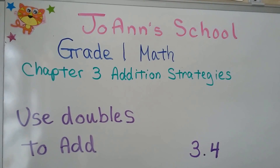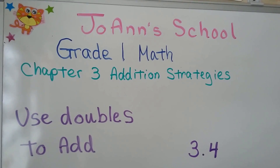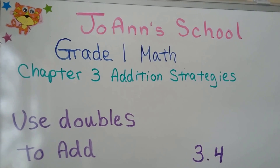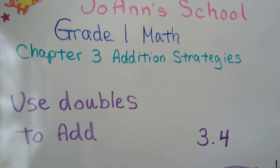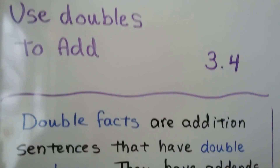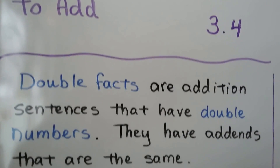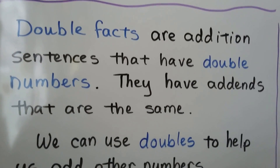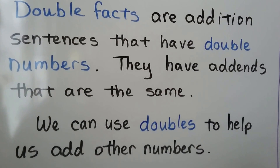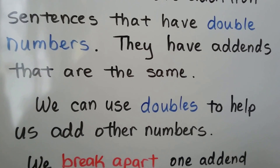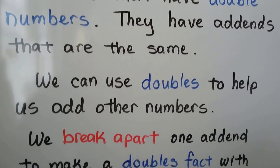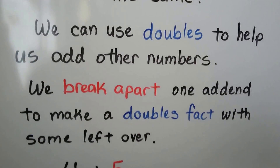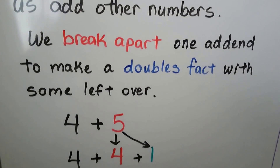We're going to learn how we can use doubles to add other numbers. Double facts are addition sentences that have double numbers — they have addends that are the same. We can use doubles to help us add other numbers.